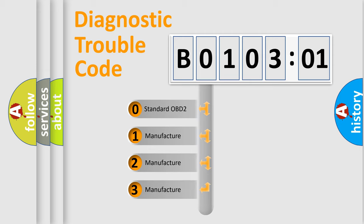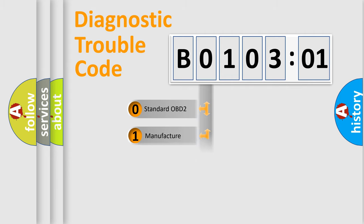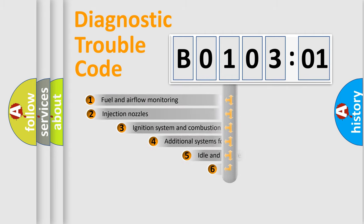If the second character is expressed as zero, it is a standardized error. In the case of numbers 1, 2, 3, it is a more prestigious expression of the car-specific error.